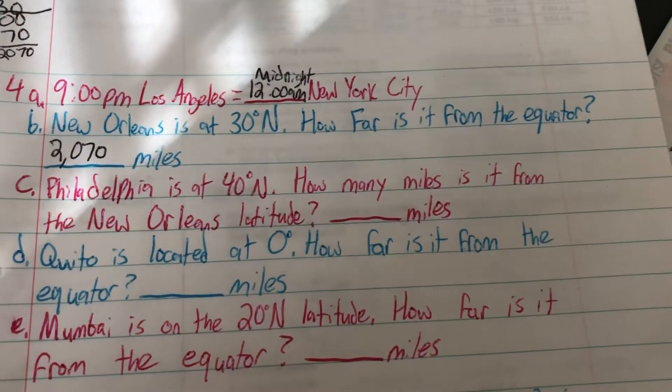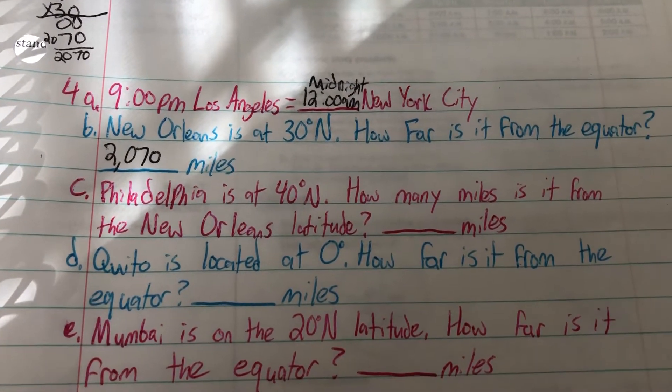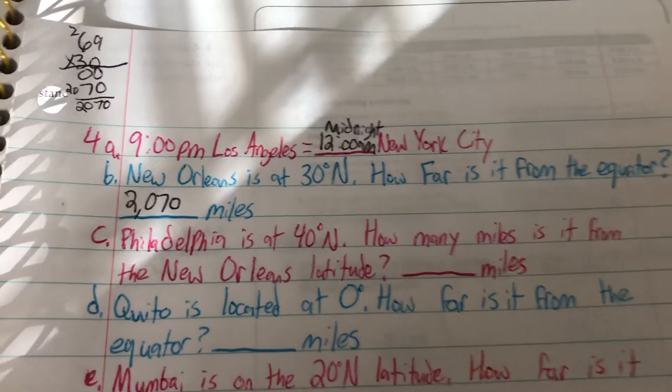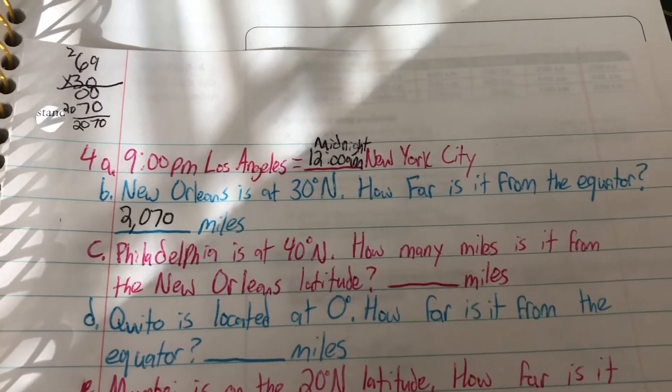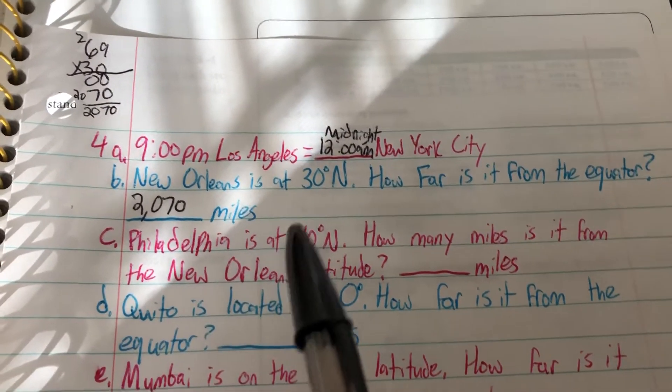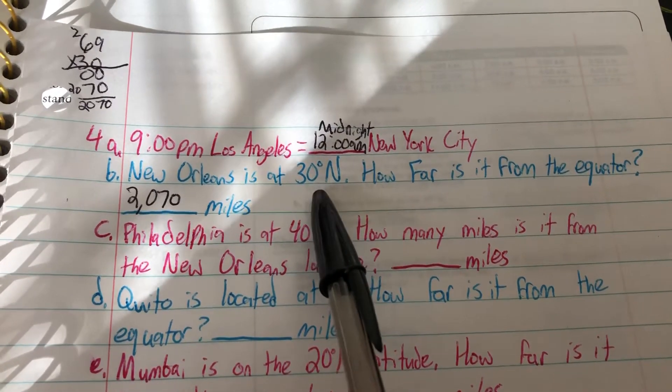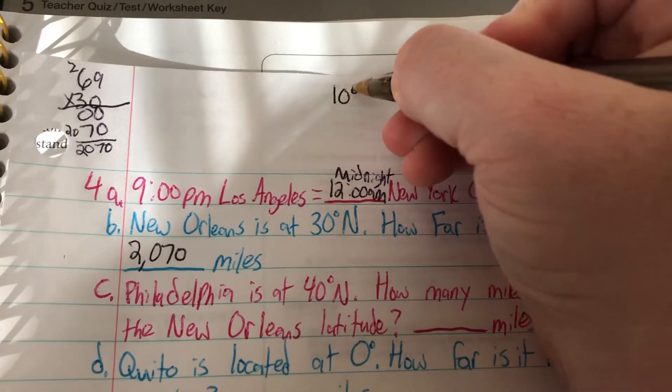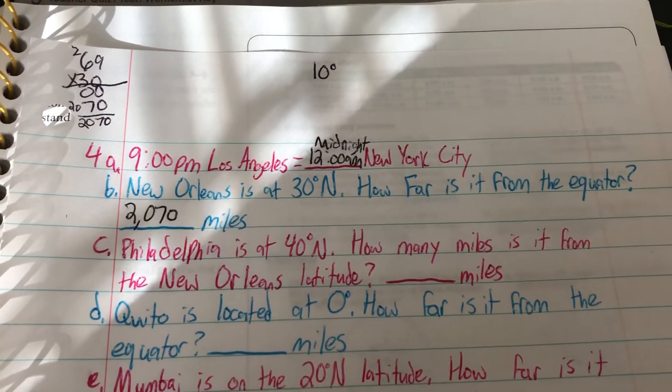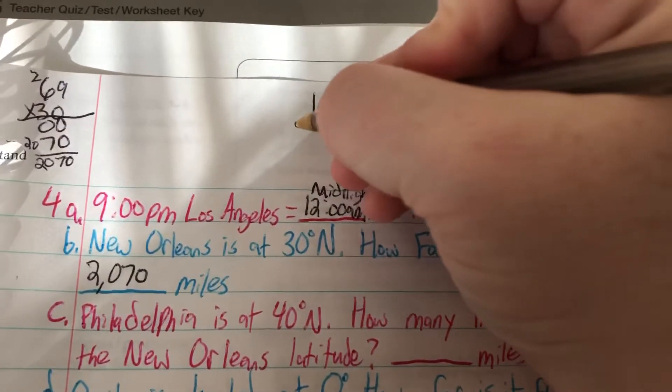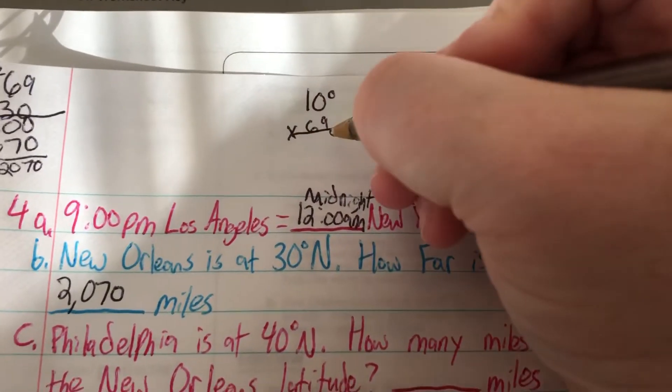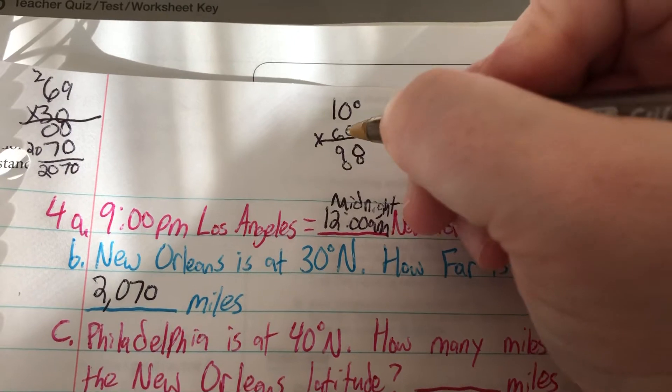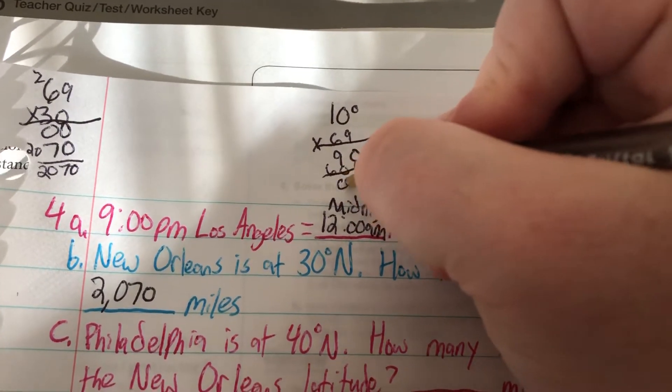C, Philadelphia is at 40 degrees north. How many miles is it from the New Orleans latitude? It doesn't want to know how far it is from the equator. It wants to know how far it is from New Orleans latitude. We aren't talking about how far east or west yet, we're just talking about north and south. So, New Orleans is 30 degrees north, Philadelphia is 40 degrees north. That is a difference of 10 degrees. Now we can multiply that by our 69 miles. It would be 690 miles.